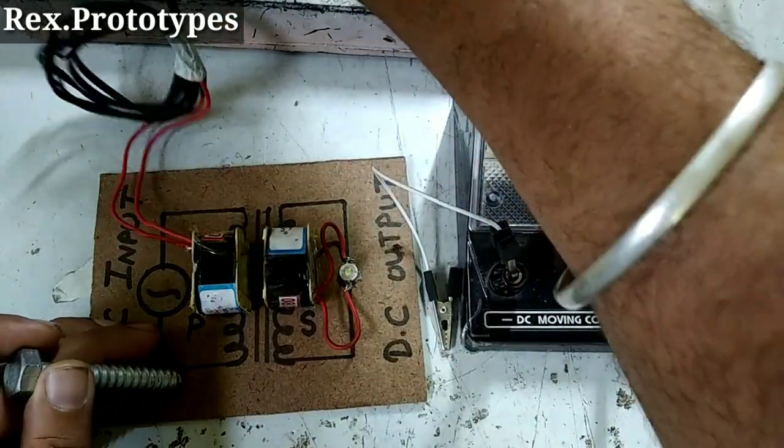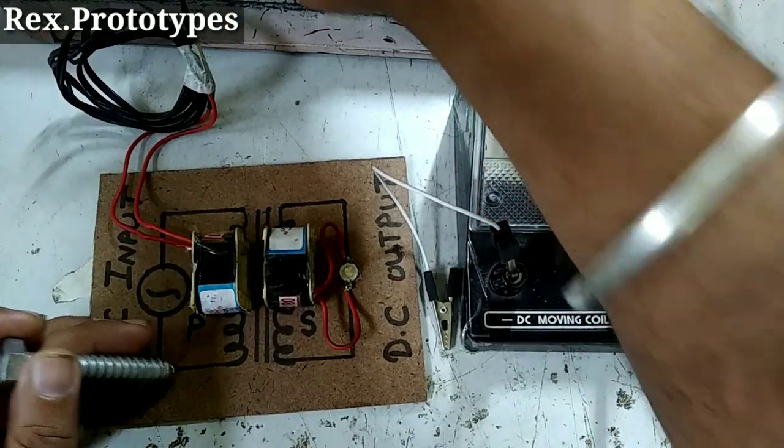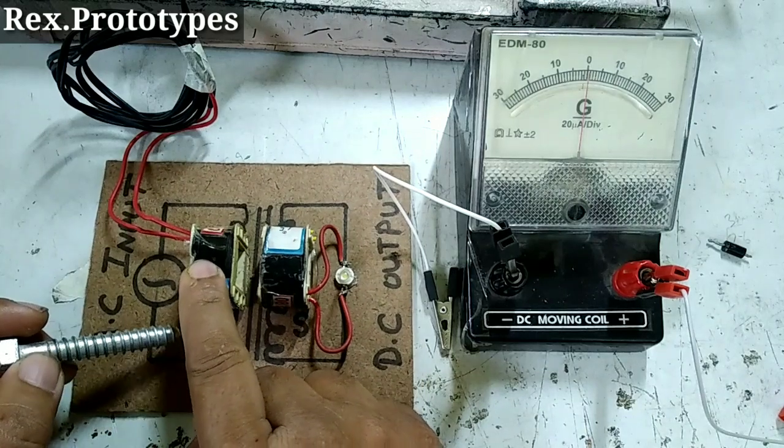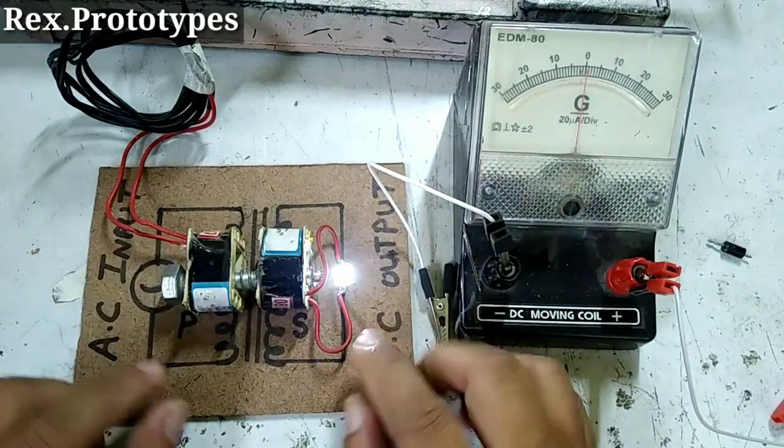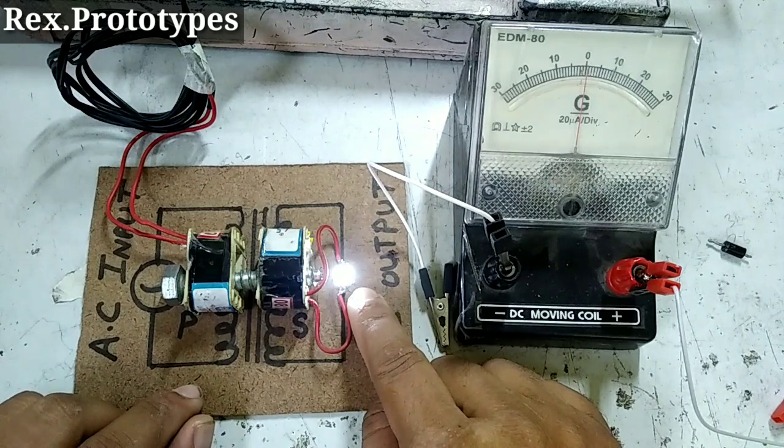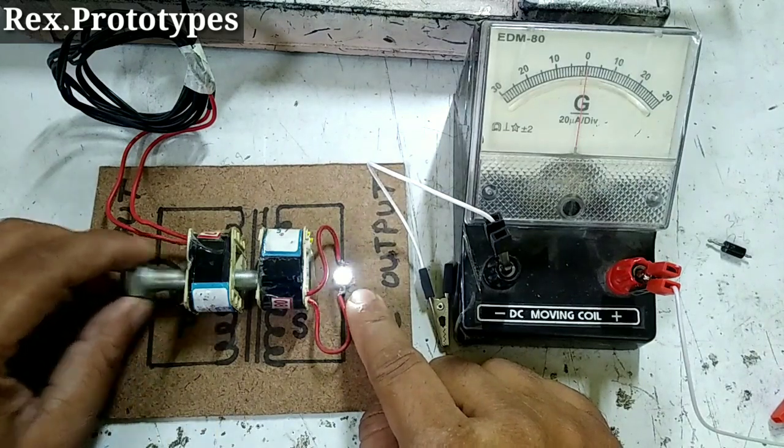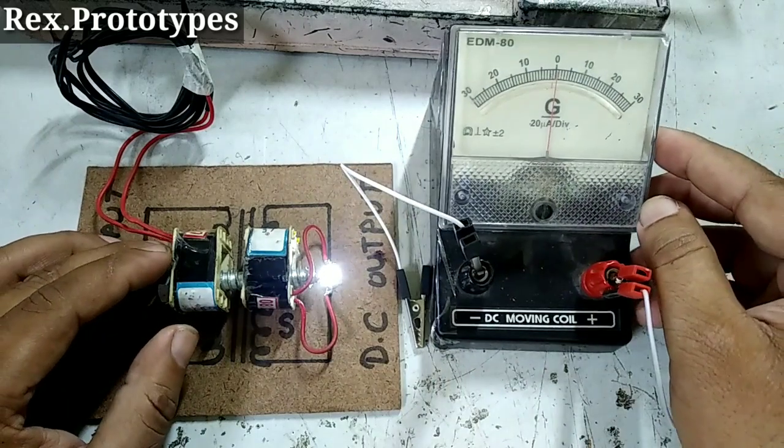So first of all, how this works, here the input is given, we will insert the soft iron core. You can see the LED is glowing. Now, we will connect the galvanometer here.